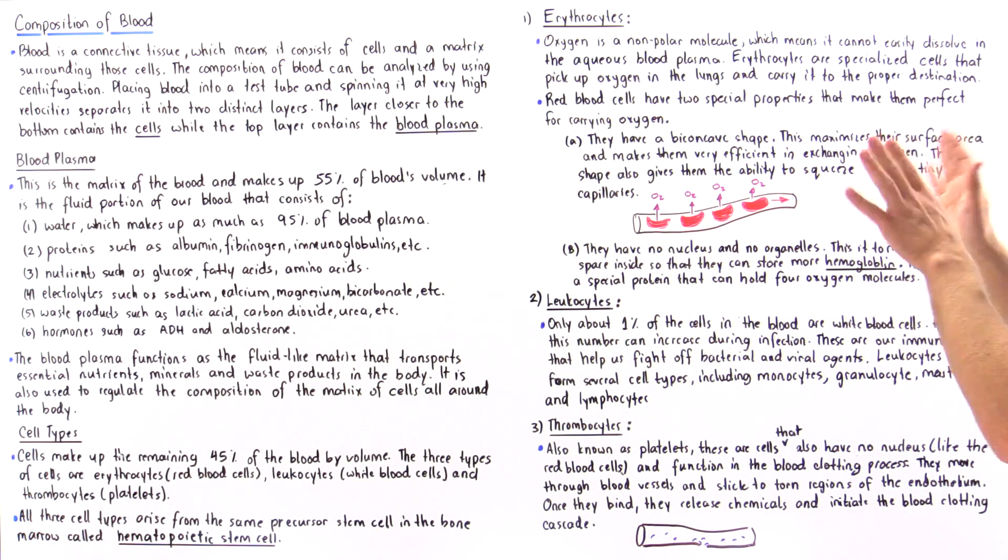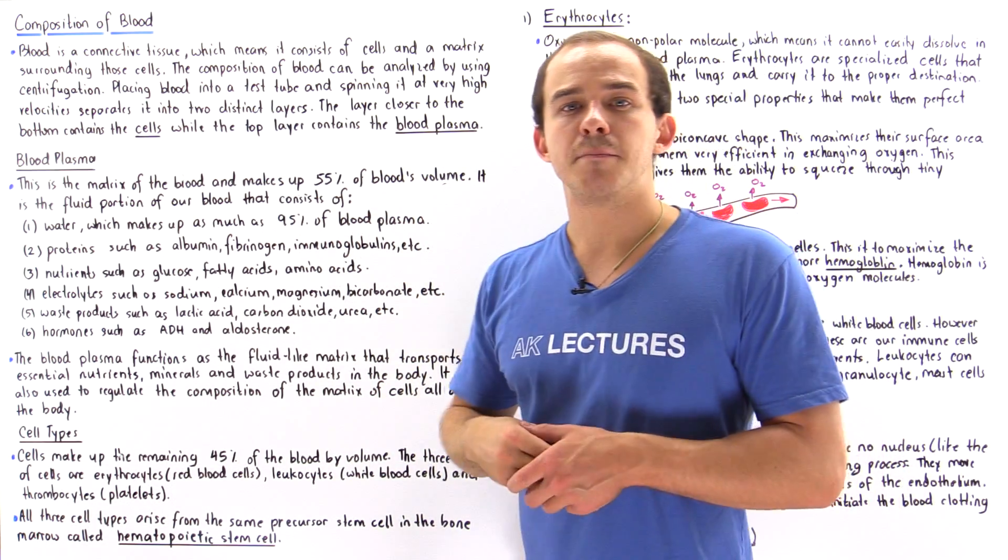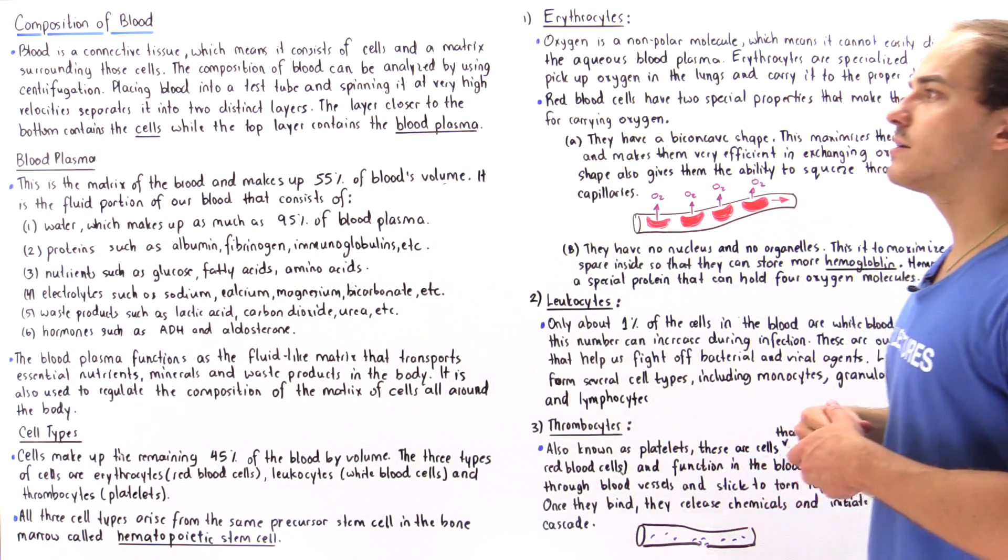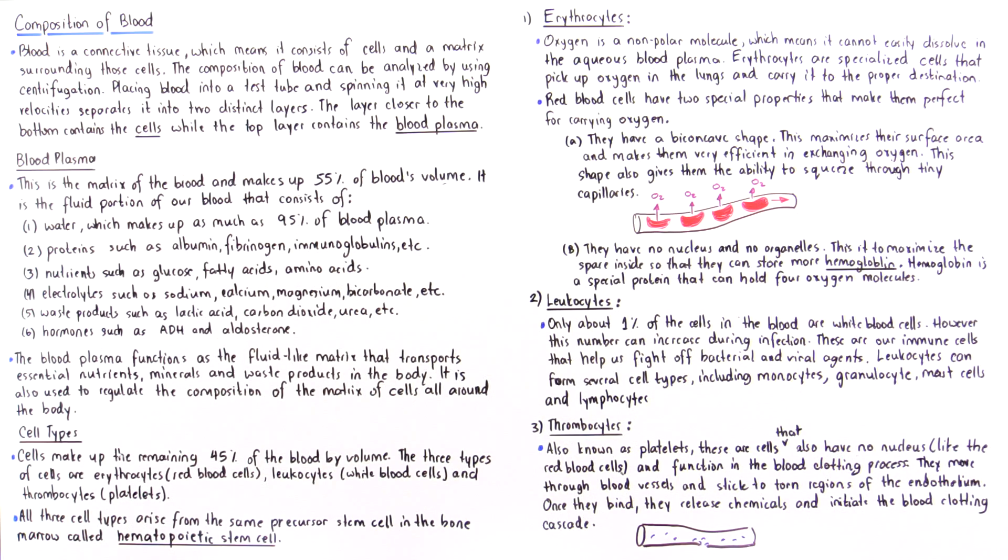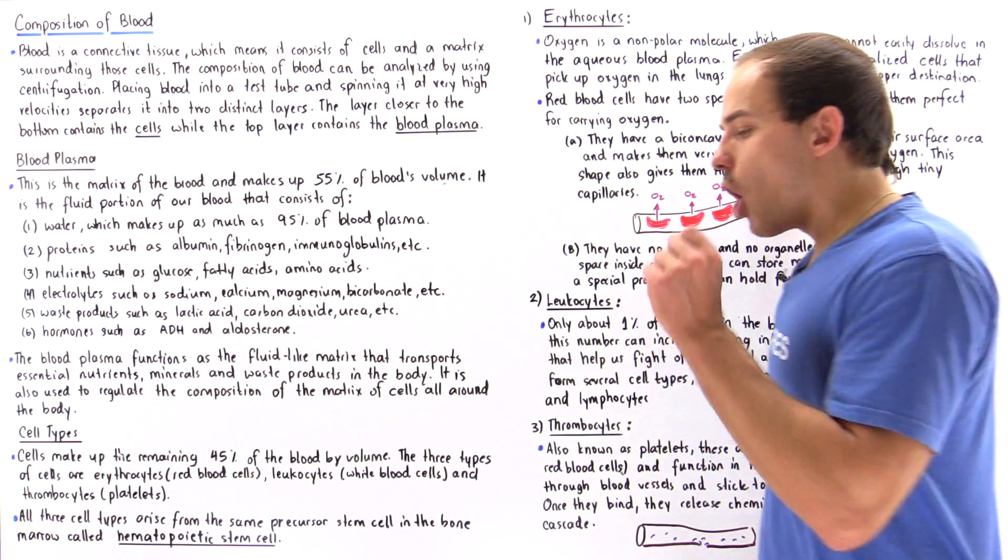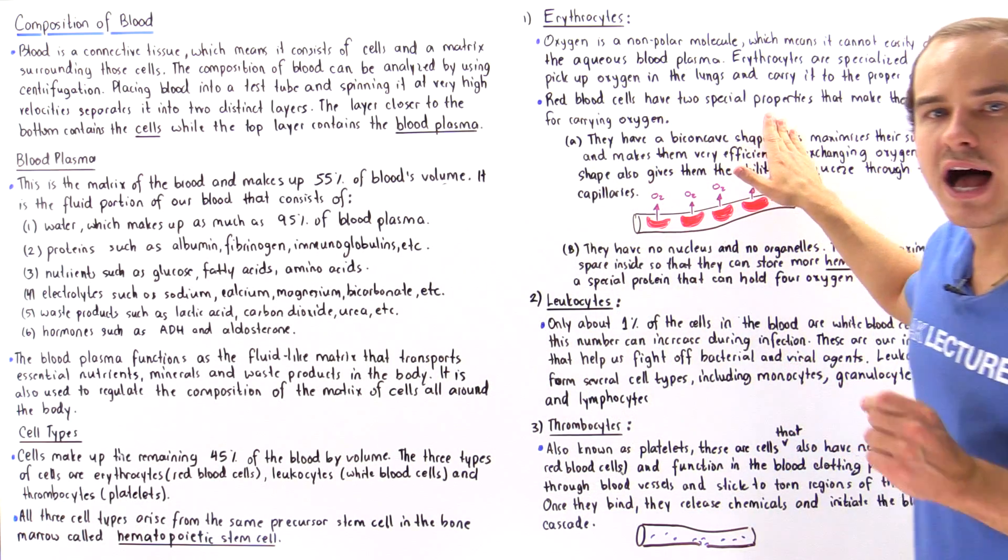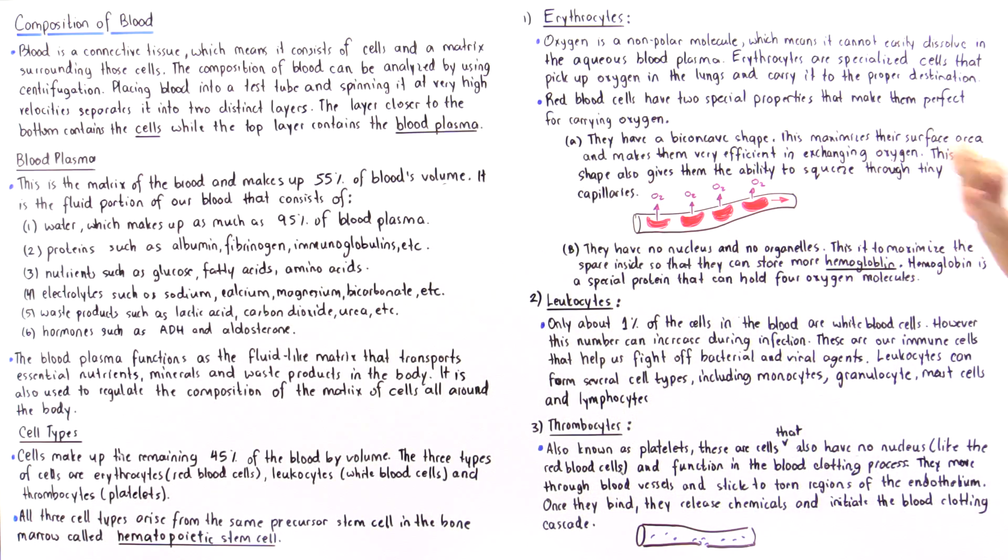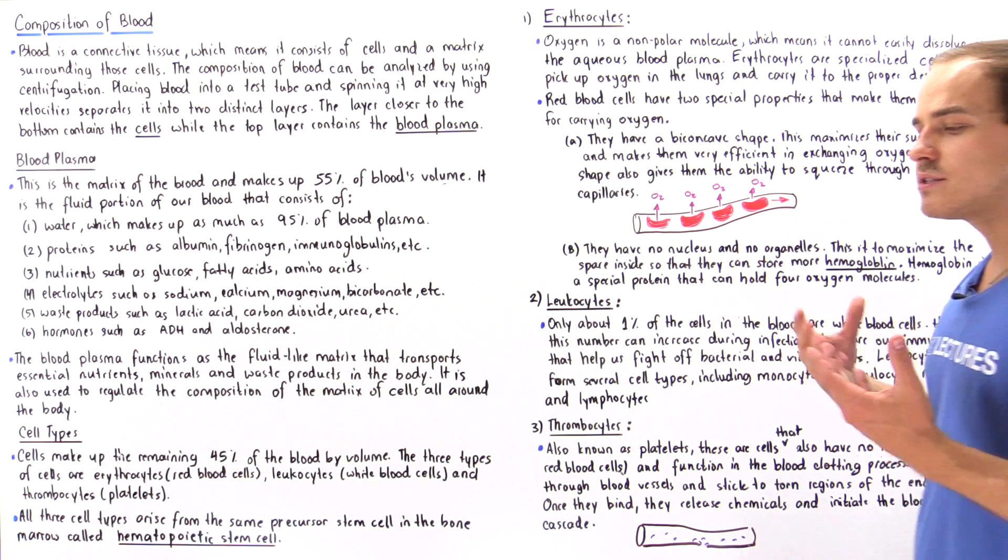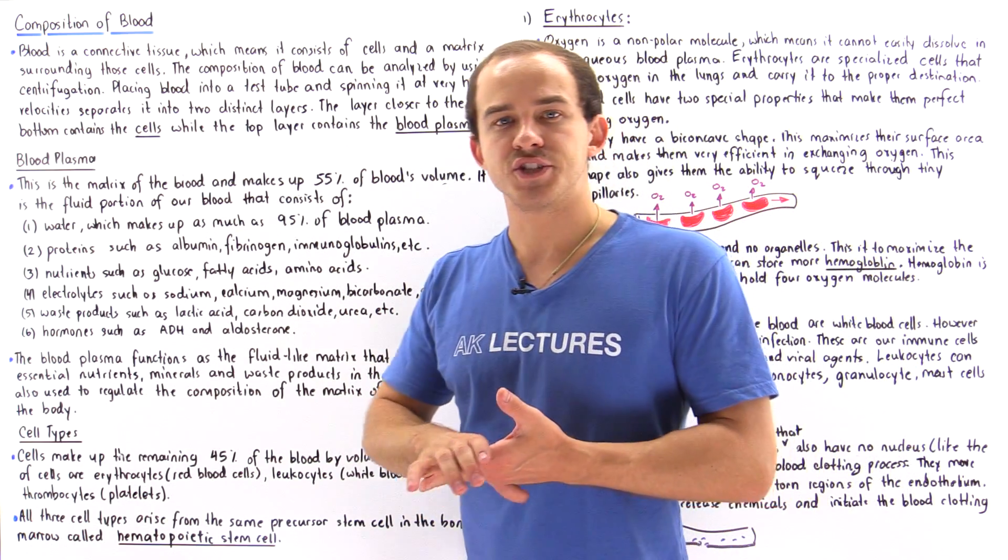Now because water is the main constituent of blood plasma, that makes our blood aqueous. And that implies that oxygen, because it is nonpolar, it does not actually easily dissolve in the aqueous blood plasma. And so what needs to happen is, when oxygen gets into our lungs, it's the red blood cells that actually pick up that oxygen in the lungs and carry it to the cells of our body that need that oxygen to basically produce ATP for energy.